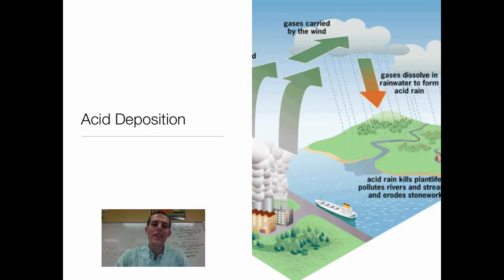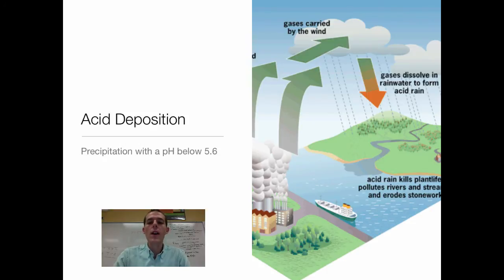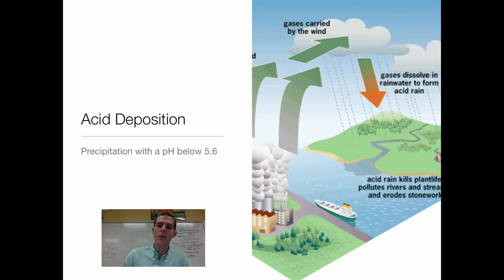Now we're going to move on to acid deposition. The simplest definition is that acid deposition is precipitation with a pH below 5.6. Just naturally occurring precipitation is acidic — the rain that is in clouds starts out at a neutral 7, but as it combines with naturally occurring and anthropogenic carbon dioxide, it does become acidic. Rain between 7 and 5.6 is normal, but if the pH of that rain is below 5.6, it's considered to be acidic rain or acid deposition.